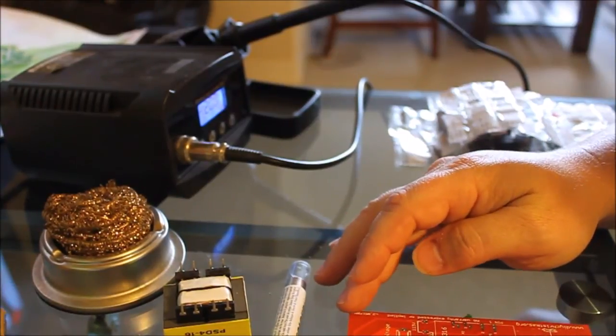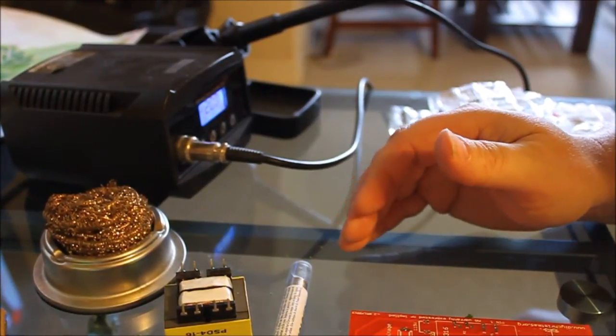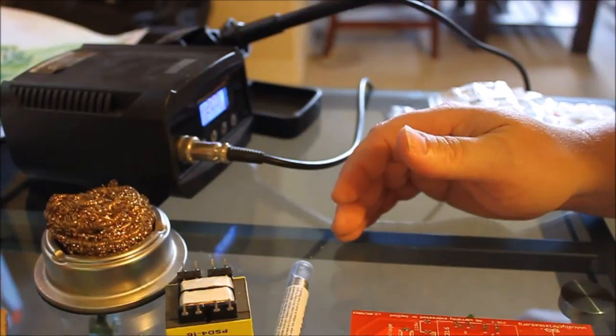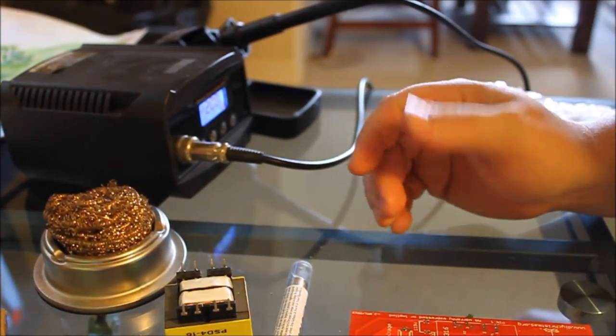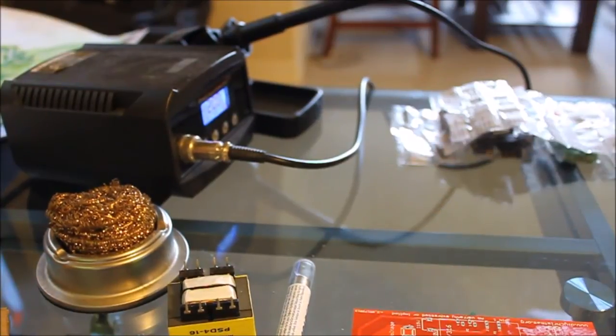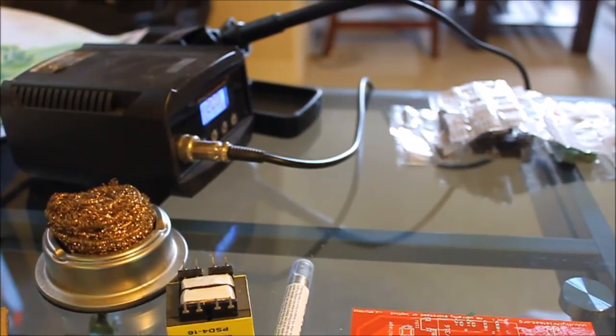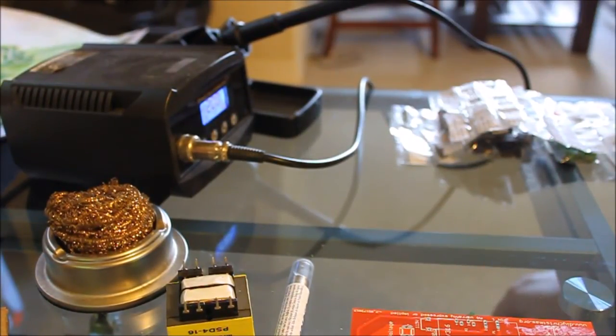Any 60/40 or 63/37 solder will do. Any diameter will do. It just depends on how well you control it as it's melting. Next thing we'll do is open the parts kit up here and start soldering the resistors.